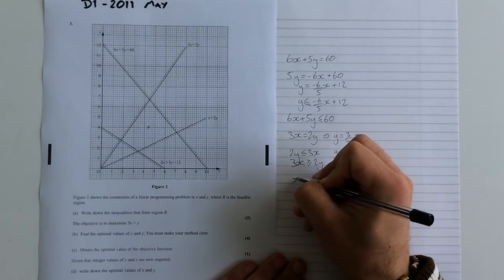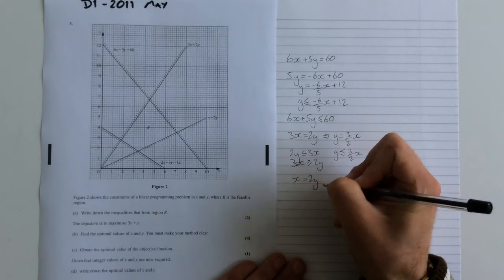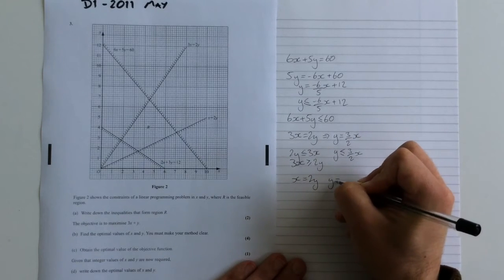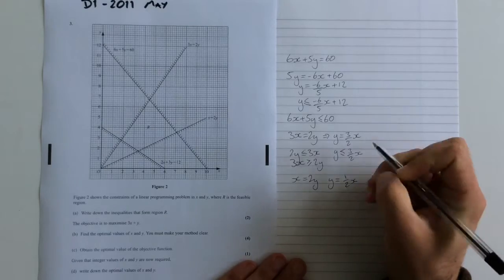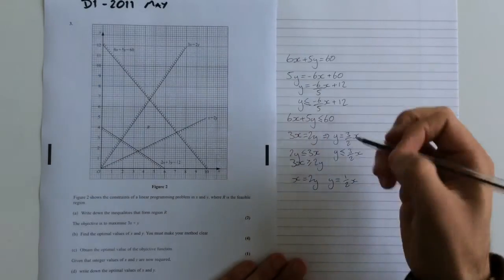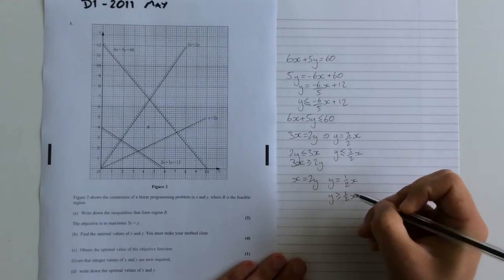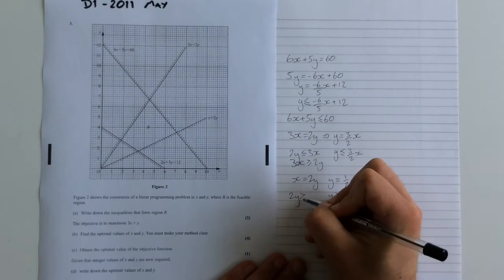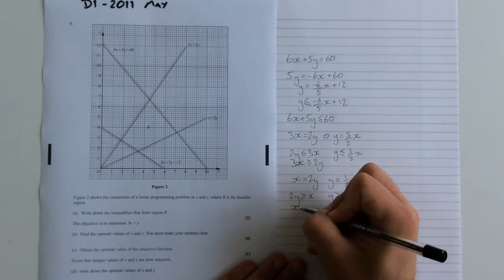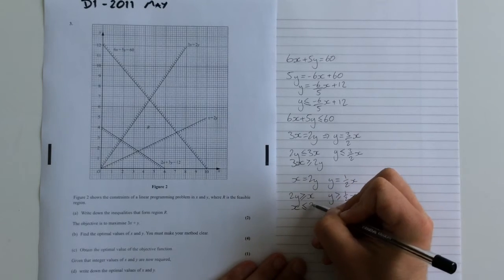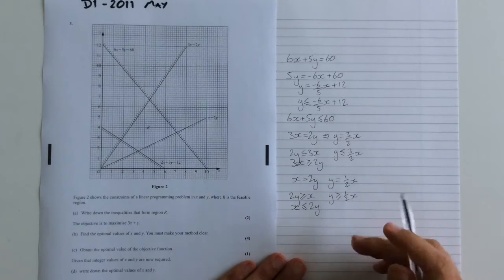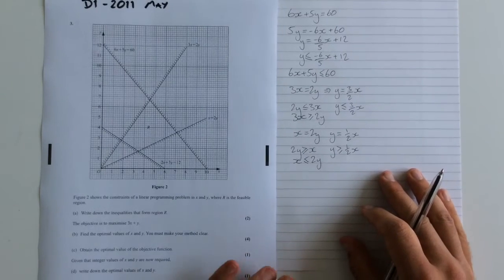This one here, x equals 2y. Rearrange that if you want to. y equals 1 half x. We want the stuff above that, so we want y to be greater than or equal to 1 half x, which rearranges to 2y is greater than or equal to x. Or if you want it the other way round, x is less than or equal to 2y. That's three of them done.